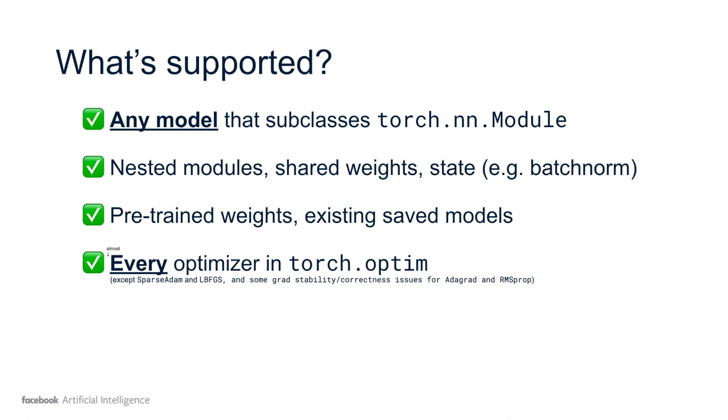We support every optimizer in torch.optim except SparseAdam and LBFGS. As a warning, there are some possible gradient stability issues or correctness issues for AdaGrad and RMSprop that are being fixed. Crucially, this allows us to do out-of-the-box meta-learning on GPUs. It's basically using PyTorch's auto-diff engine under the hood. So even though we're doing something fancy with regards to the monkey patching, it runs as fast as if you wrote a manual version of the model yourself and you can use all the PyTorch machinery for GPU computation.